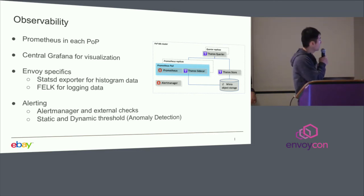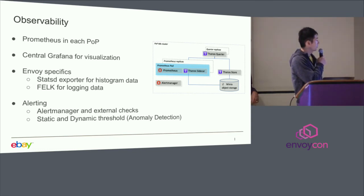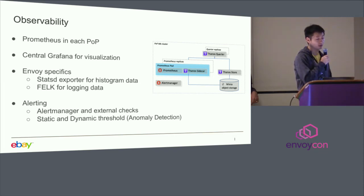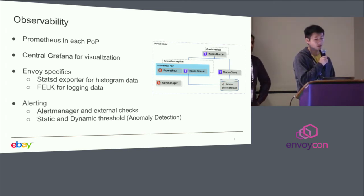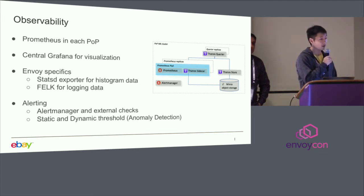For Envoy-specific monitoring, we use a StatsD exporter as a sidecar running together with Envoy to receive histogram data. That StatsD exporter exposes a Prometheus interface for Prometheus to scrape from. We use the FELK stack for access logs — F stands for Filebeat. Inside each L7 pod, Filebeat ships the access log to a centralized log search farm, where logs are processed and sent to a Kafka data sync, then sent back to the data center where we have a managed Elasticsearch cluster. From there, we run analytics jobs for analytics and alerting.